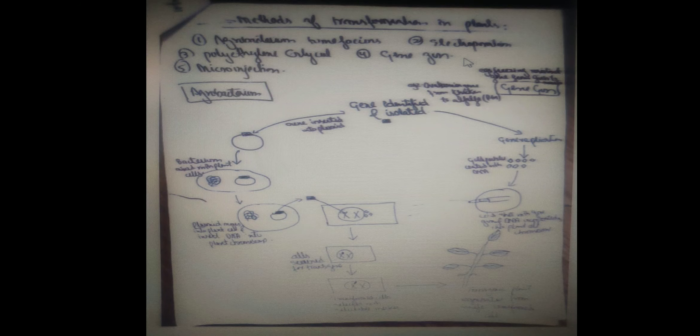Once the gene of interest is incorporated into the genome, we produce the plants and screen whether the gene has placed correctly in the plant genome. The second technique for transgenic plant creation uses electroporation, polyethylene glycol, gene gun, or microinjection to insert our gene of interest into the plants.